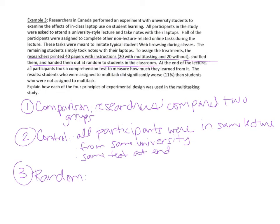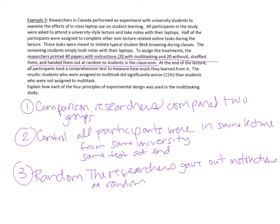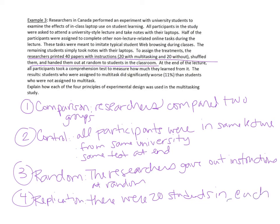Not only did the researchers not choose who got which paper, but they didn't even know who they were giving it to, and the students likely didn't realize how their papers differed. For replication, there were 20 students in each group. They might want to repeat this experiment with more subjects, but they did a decent job with replication.